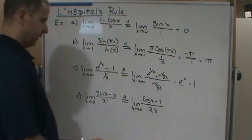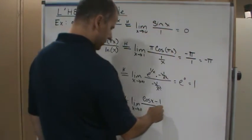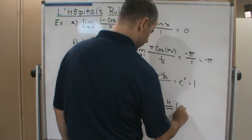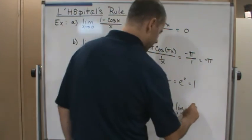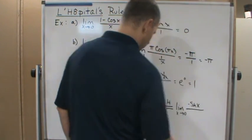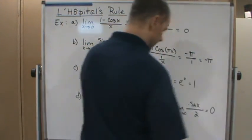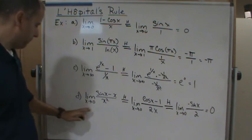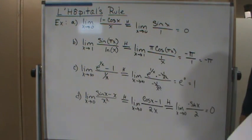But these are continuous and differentiable functions, so we can apply L'Hôpital's rule again. By L'Hôpital's rule, this equals the limit as x approaches 0. Taking the derivative of the top again, we get negative sine x over 2. As x approaches 0, we get 0. So the limit of the original problem is 0. This example shows that you can apply L'Hôpital's rule multiple times in the same problem.